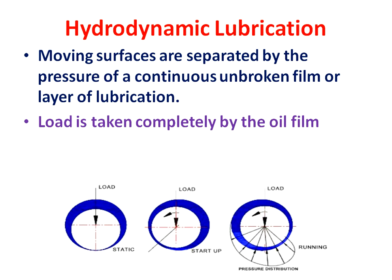When the shaft is in full running condition, there is an unbroken continuous oil film around the shaft and there is no physical contact between the bearing and shaft. In hydrodynamic lubrication there is a continuous film between the two rotating parts — between the bearing and journal shaft. The load is taken completely by the oil film. Load acts downward and is totally supported by the oil film, with no physical contact between the bearing and the shaft.